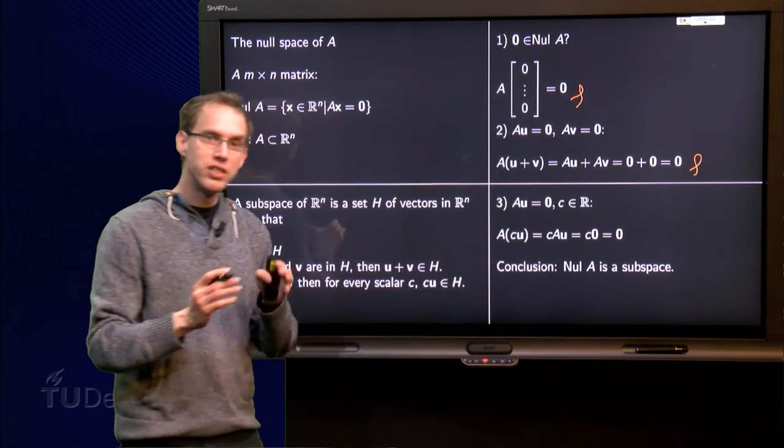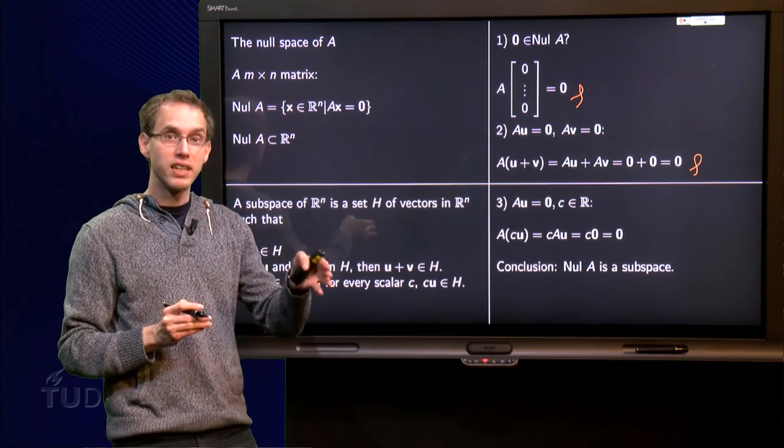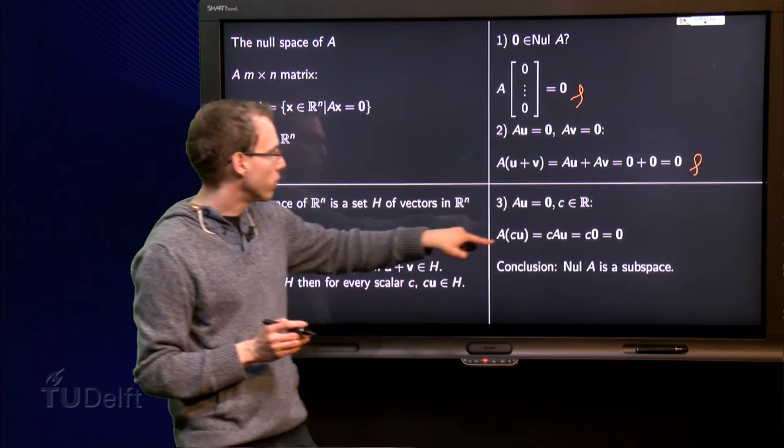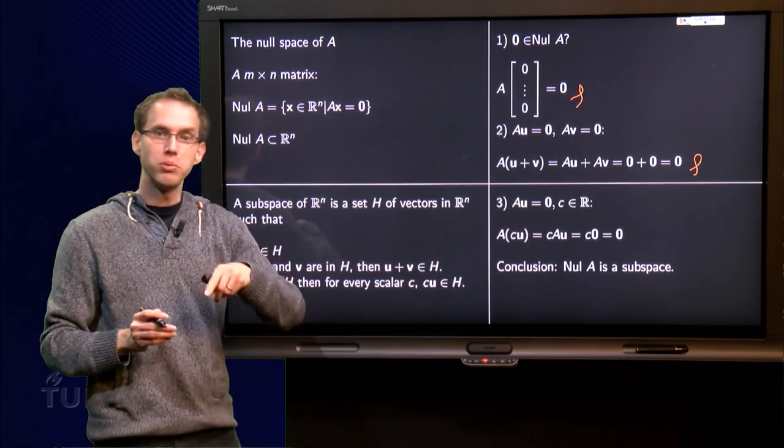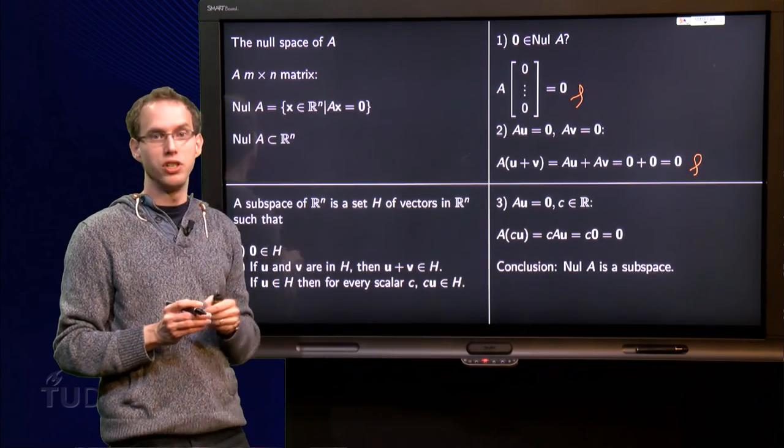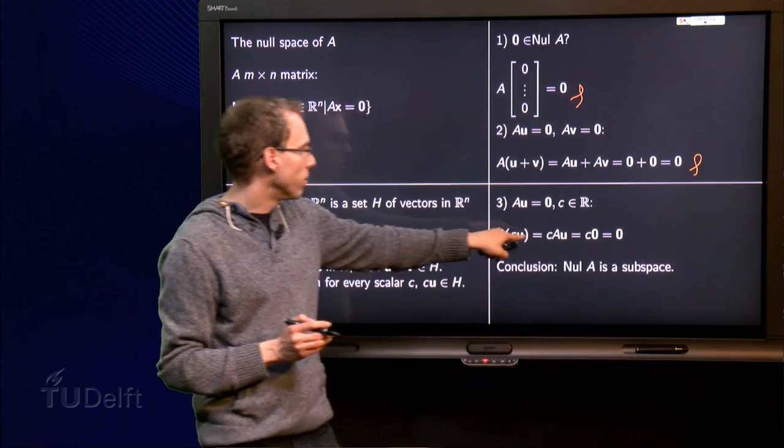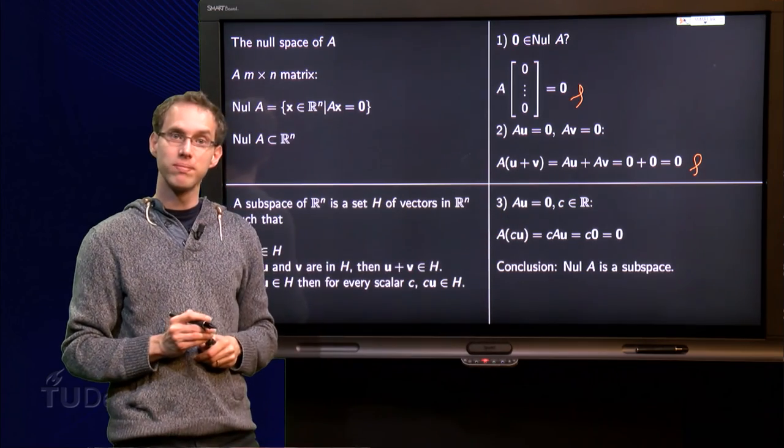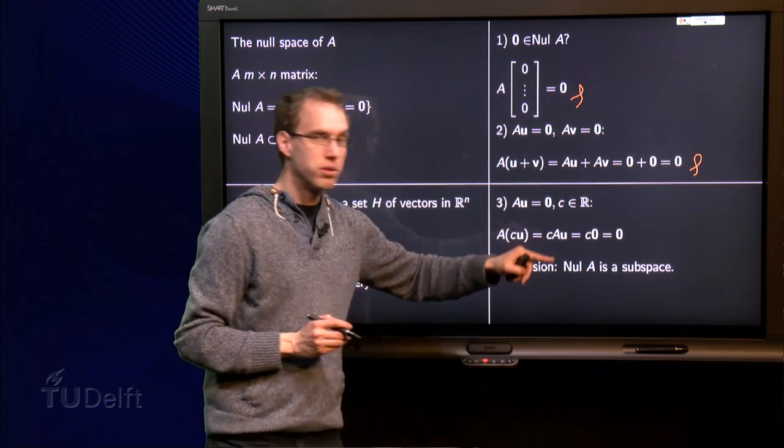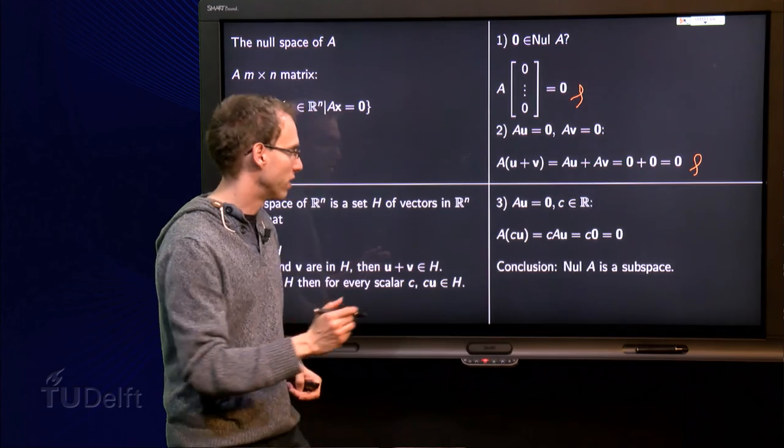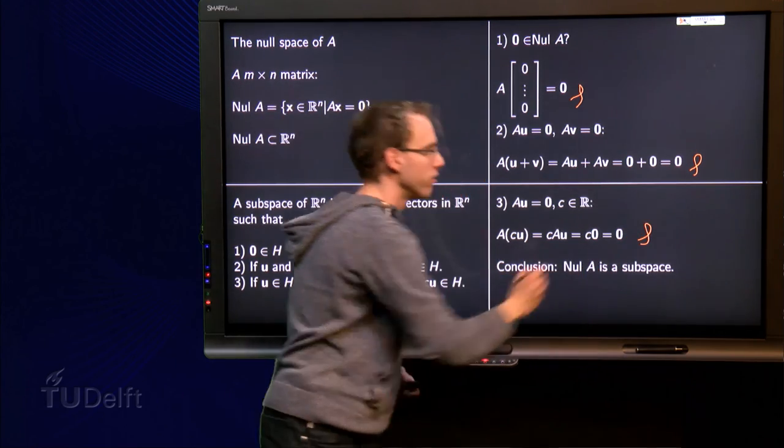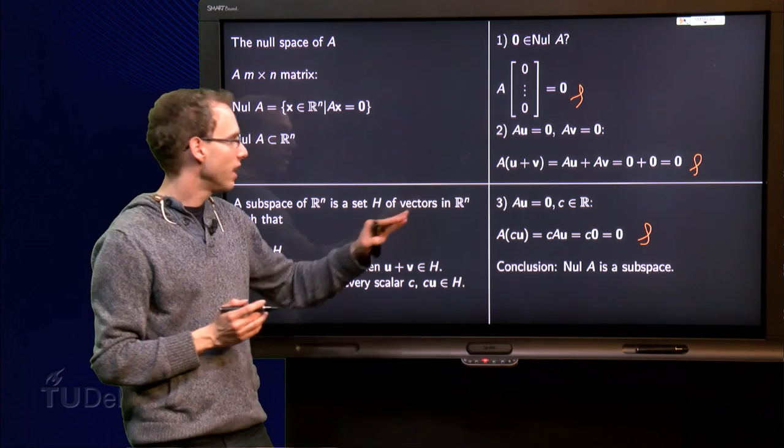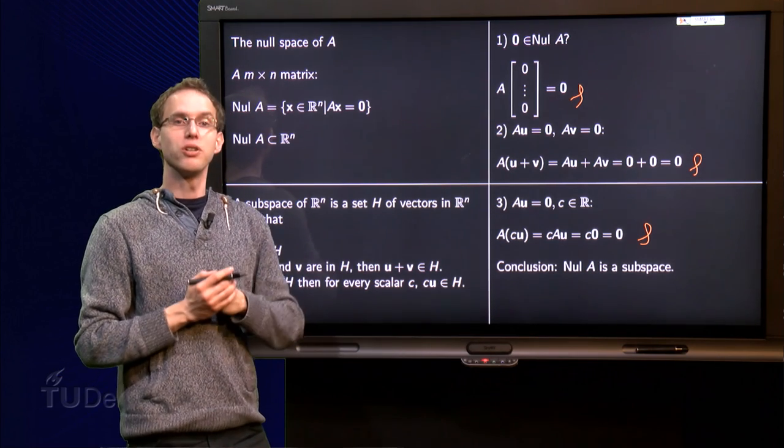Well, A times c times u is a matrix times scalar times vector, but I can also compute it like c times A times u, we can take the scalar out, it is just a factor, so that becomes c times A times u. But A times u equals the zero vector, and some scalar times the zero vector is of course still the zero vector. So the third property is also satisfied, which means that we now have established that indeed, null space is also a subspace.